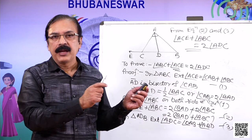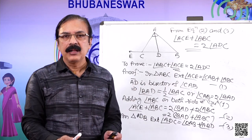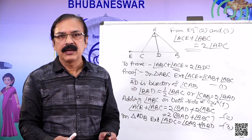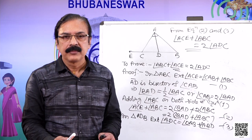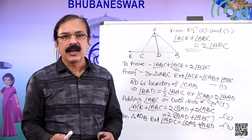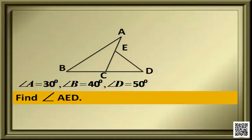Here also, the exterior angle and interior opposite angle relationship was applied. Now, look at another question. In the figure, angle A is 30 degrees, angle B is 40 degrees, and angle D is 50 degrees. Find angle AED.